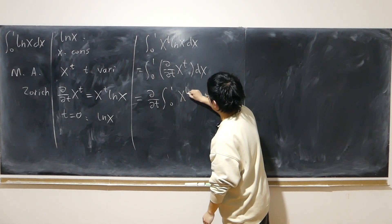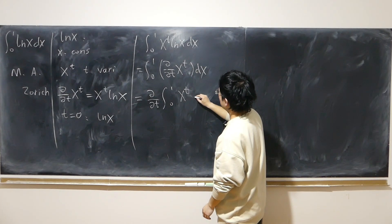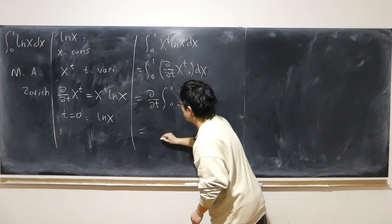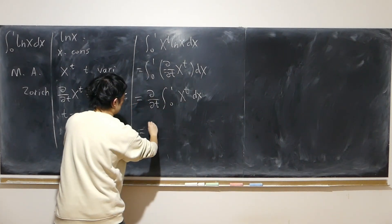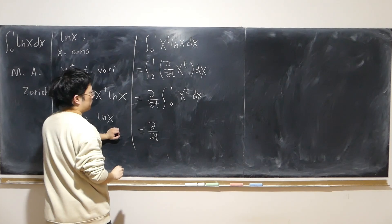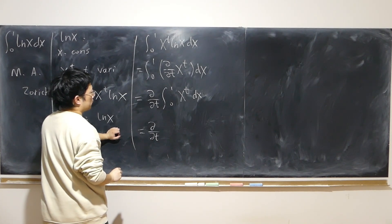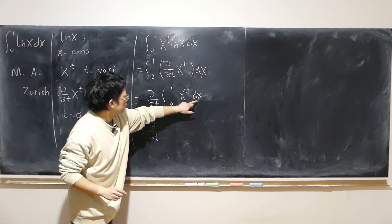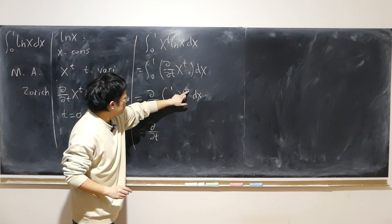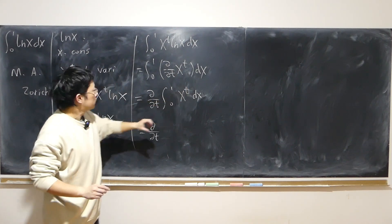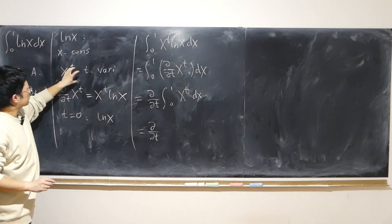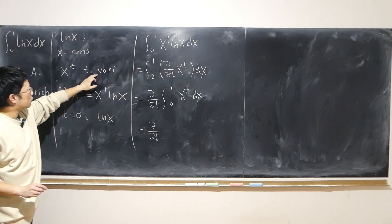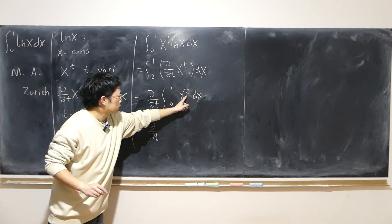Still, x to the t dx. So this time, what is that? Now, x is the variable. t is the constant. Previously, when I constructed this, t was the variable. Now, t is the constant.